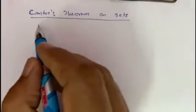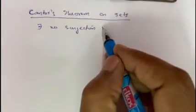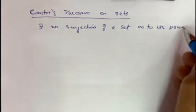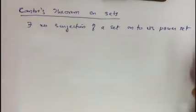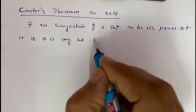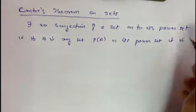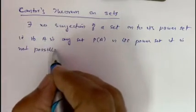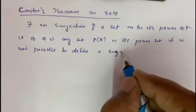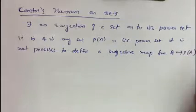Cantor's Theorem on sets. It states that there exists no surjection of a set onto its power set. That is, if A is any set and B is its power set, it is not possible to define a surjective map from A to B(A), the power set of A.